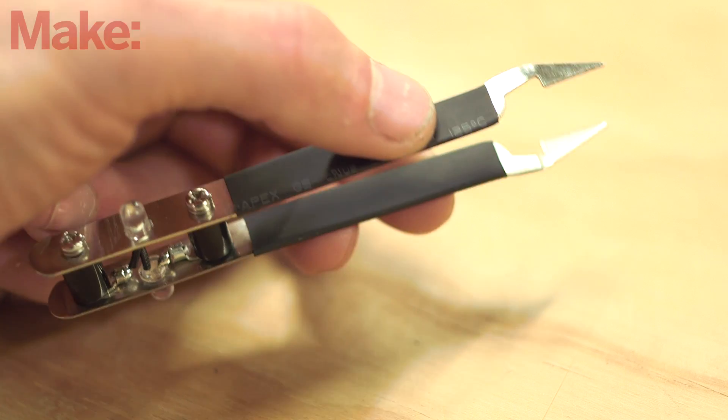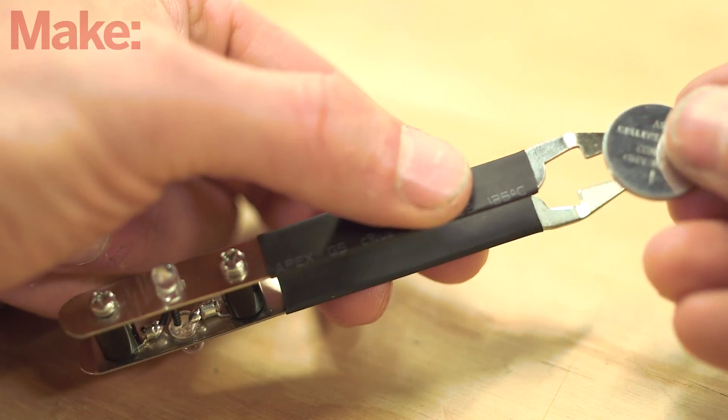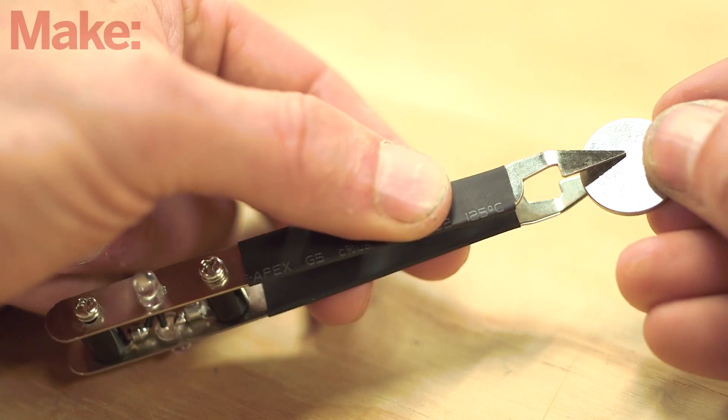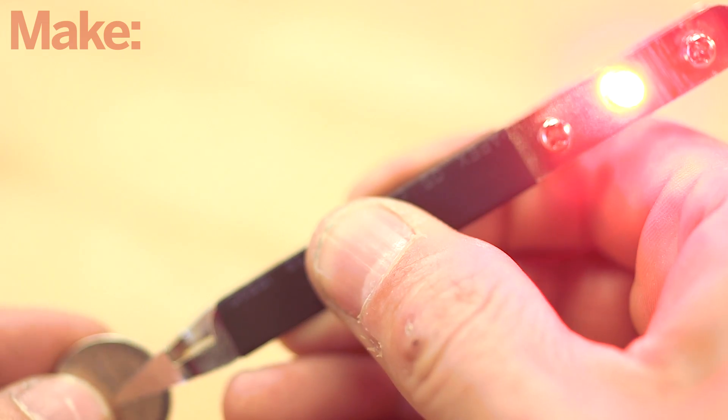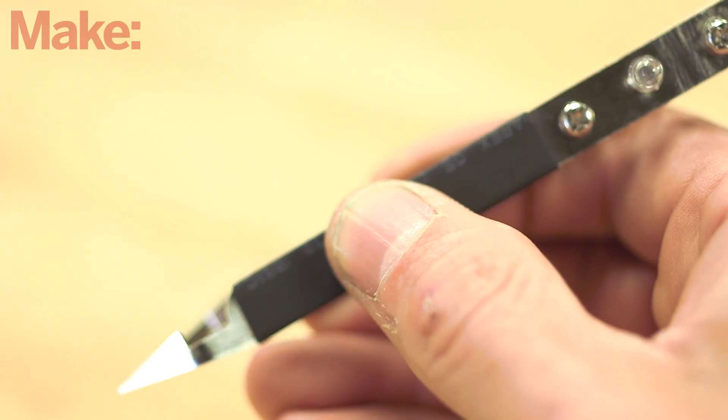To use the tweezers, grip the insulation and squeeze to close the jaws across a coin cell. If neither LED comes on, the cell is dead and can be discarded. If an LED shines brightly, the cell is giving three volts or something close to it.